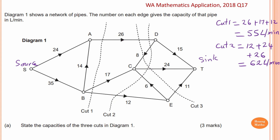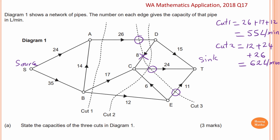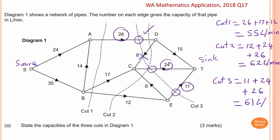For cut three, one edge is a cut from the source, and another goes straight from the source to the sink. One edge is not a cut because vertex D is already cut off — there is no more flow through D and no flow out from D. One more edge is a cut. Cut three equals 11 plus 24 plus 26, which equals 61 liters per minute.